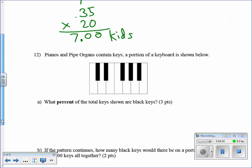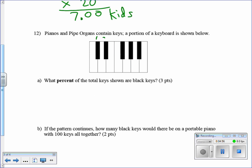The piano question: 1, 2, 3, 4, 5 black keys. 1, 2, 3, 4, 5, 6, 7 white keys. What percent of the total is black? So black over total: 5 over 12.